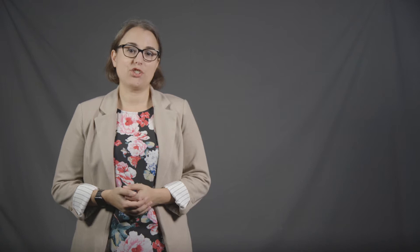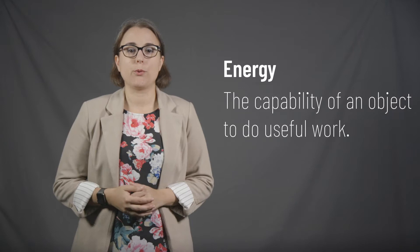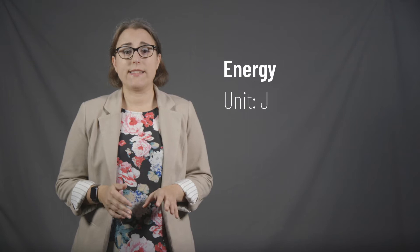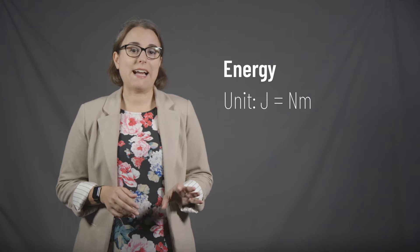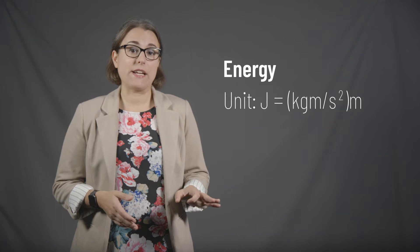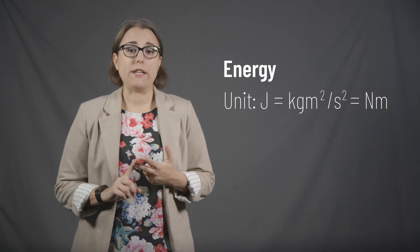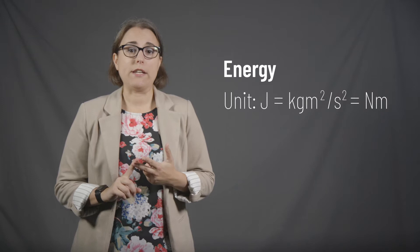Energy is defined as the capability of an object to do useful work. The unit we use to quantify it is the joule. A joule is a unit that contains other units hidden inside of it — a joule is a newton times a meter. A newton is a kilogram times a meter divided by a second squared, so a joule can be broken down as kilogram meter squared per second squared. All three of these — joule, newton meter, and kilogram meter squared per second squared — mean the same thing.